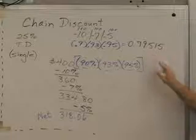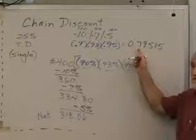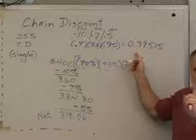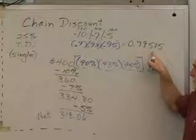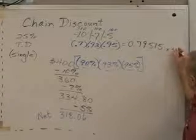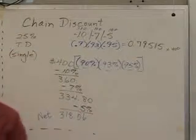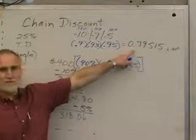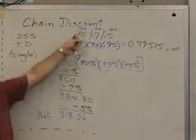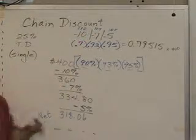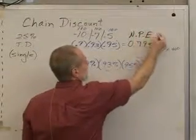Now, what does that mean? That means that's what we're paying for it. That's the rate we're paying for it. Take this .79515, which is still in your display, and multiply it times the list price of 400, and we should get this 318.06. We call this five-digit number the net price equivalent rate.